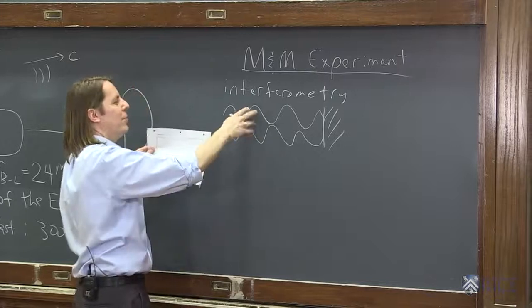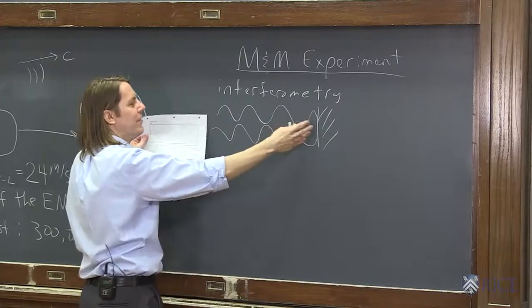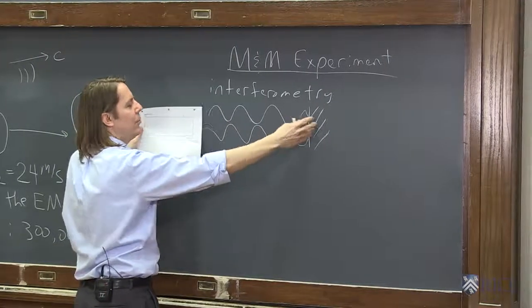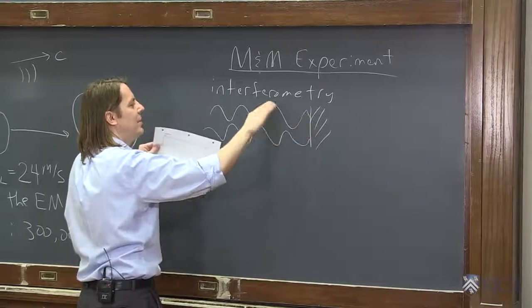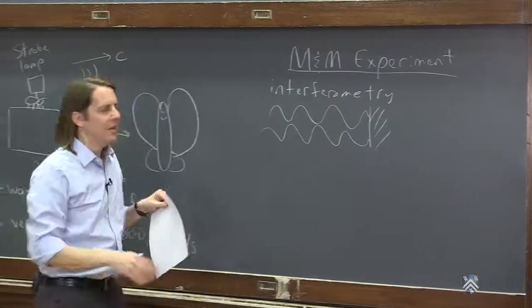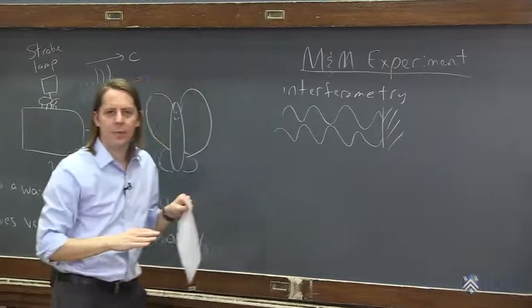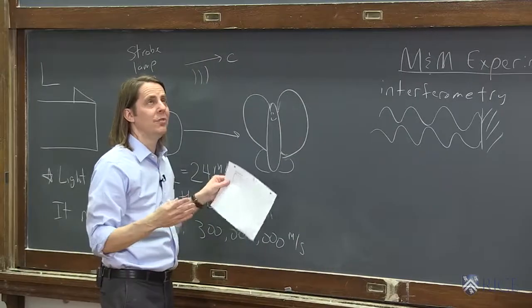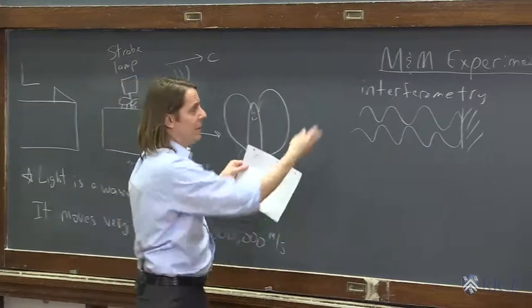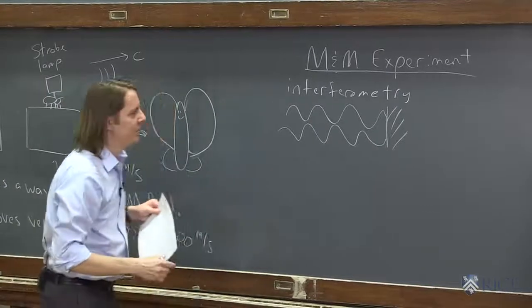So by whether they're adding or subtracting, you can detect very small changes. You can detect little changes in the spacing, little changes in the wave properties. It's an extremely sensitive technique. If you heard about the detection of gravitational waves in 2016, it was done by interferometry. Extremely sensitive interferometry.